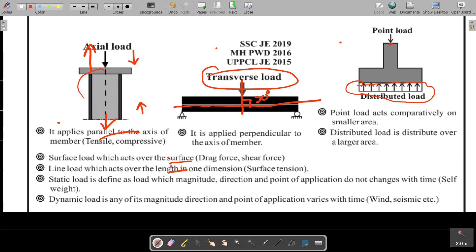Static load means magnitude, direction, and point of application are constant with respect to time. For example, in a building, the weight of the beam and the weight of the column are static loads. Dynamic load means the load which is varying with respect to time. Earthquake loading and wind load are dynamic loading because vibrations may be created.